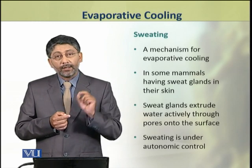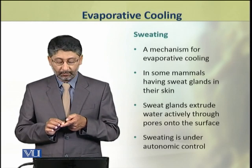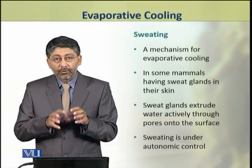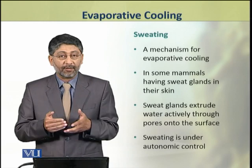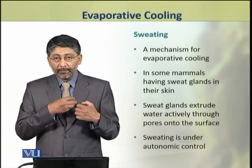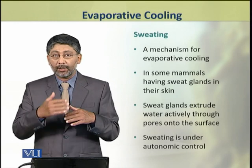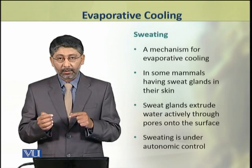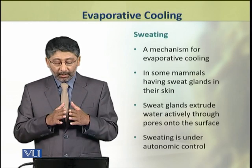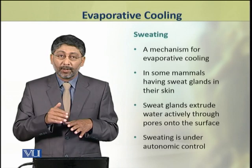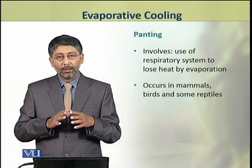Sweating is present in only those mammals which have sweat glands in their skin. The sweat glands extrude water actively through the pores onto the surface. From the surface, the water evaporates, and this evaporation results in cooling or heat loss. Sweating is under autonomic control.